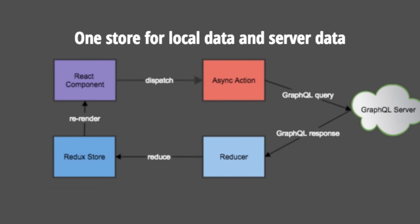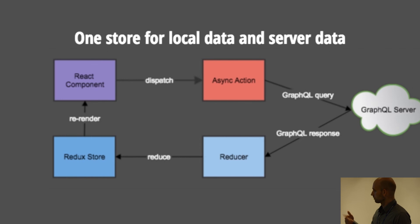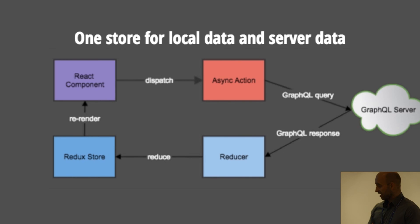Here's how it would look if you used GraphQL with Redux. You use an asynchronous library — I'm using Redux Thunk at the moment — and all you do is start an asynchronous call to a GraphQL endpoint, send your GraphQL query, and then the response that comes back you reduce and put into the Redux store, which re-renders your components.